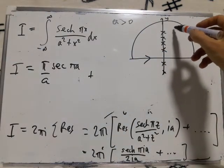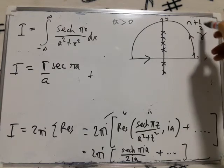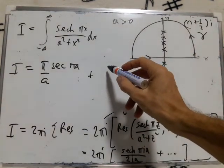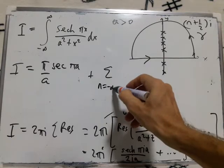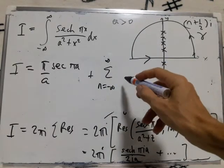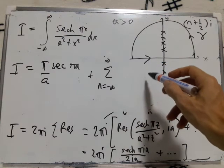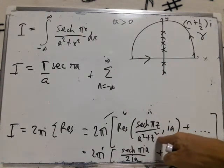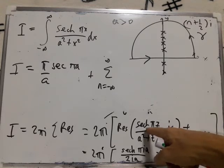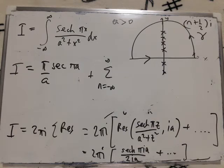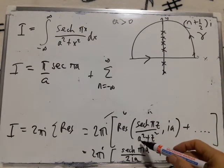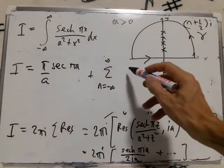We said okay, we've got the other poles at n plus a half i, and we're going to have infinitely many. So we're basically summing over all possible values of n, n equals minus infinity to plus infinity, and then the residue at those values. So now what we're doing is, our q is cos πz, and our p is a squared plus z squared. So we end up with one over, one over a squared plus n plus a half squared times i.